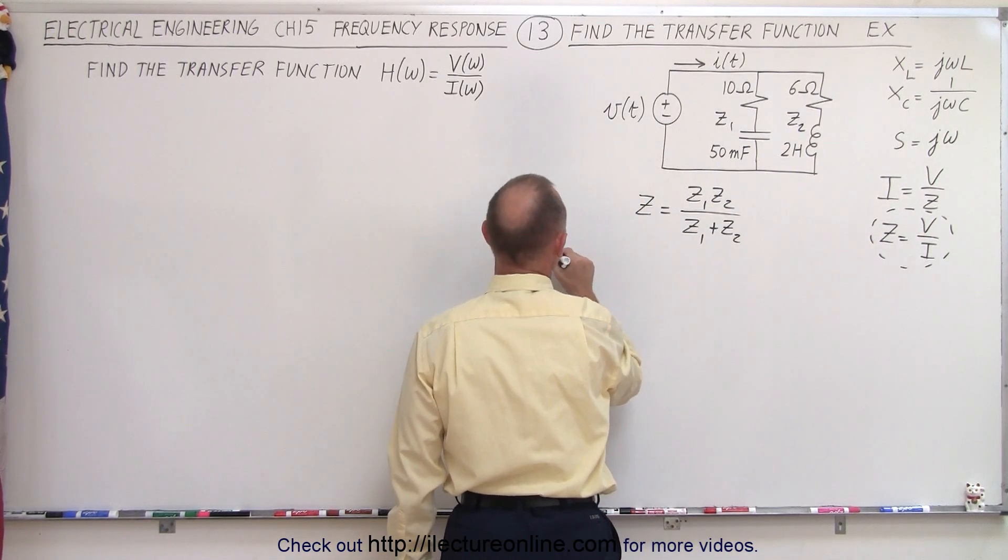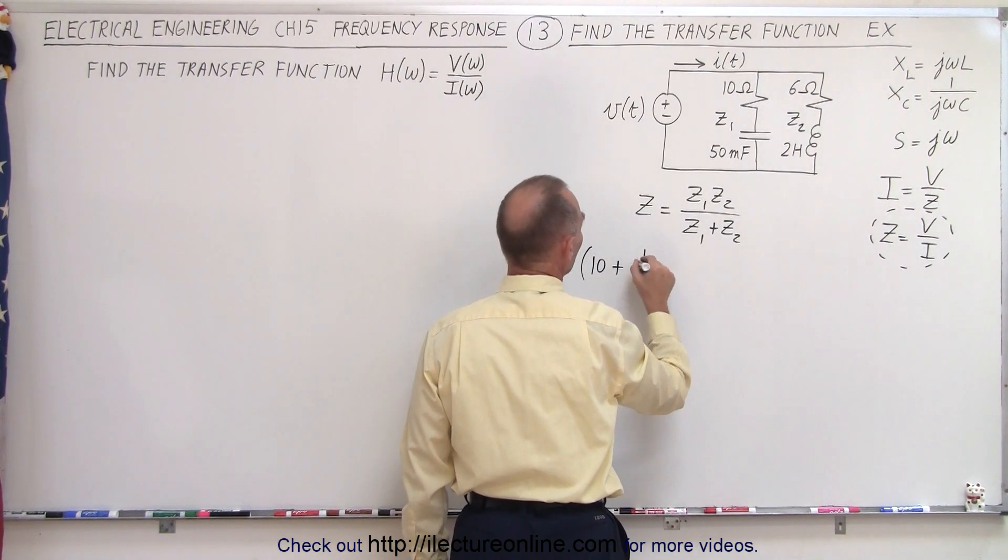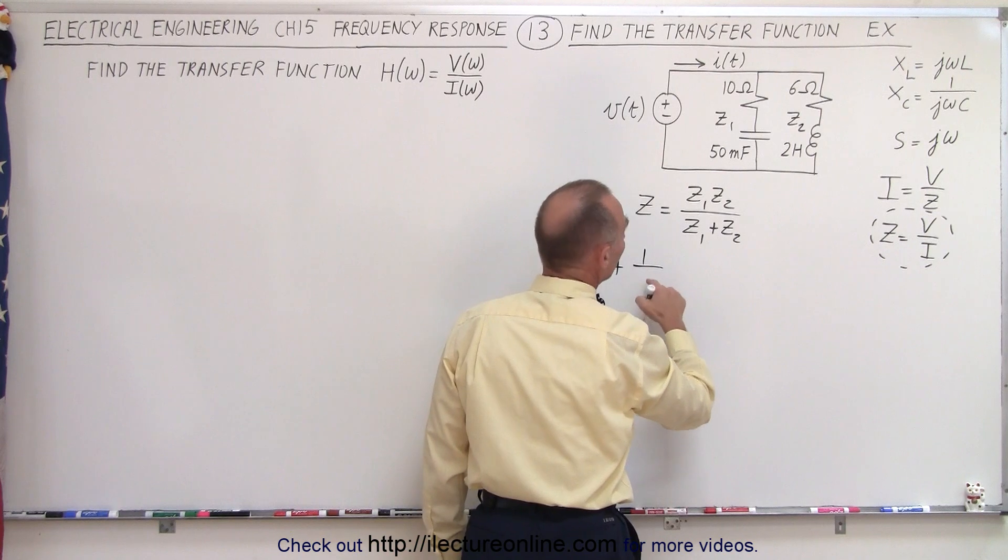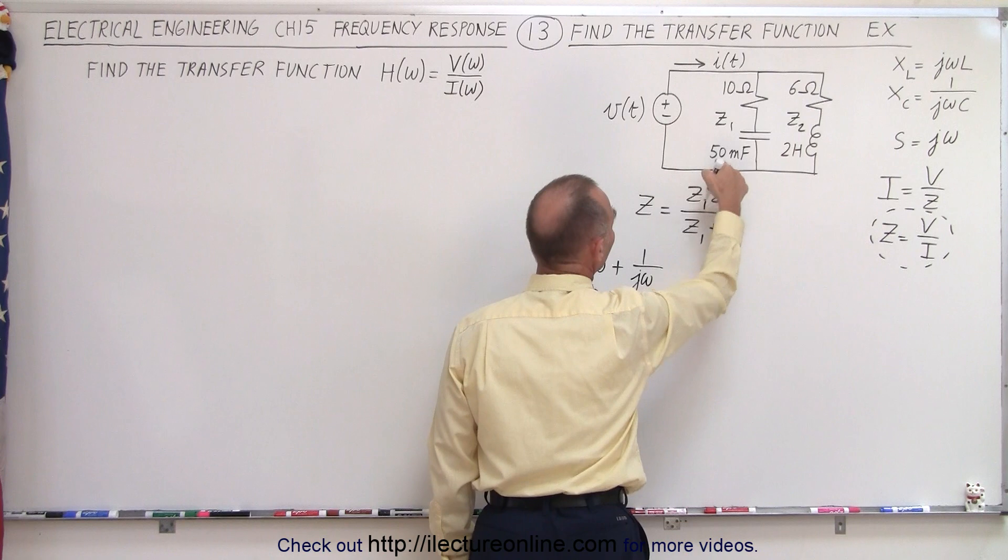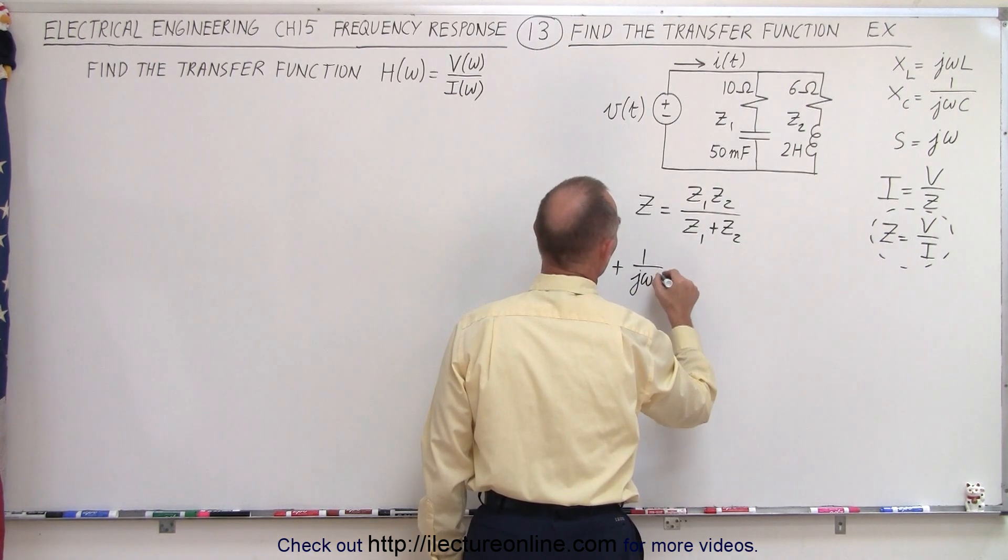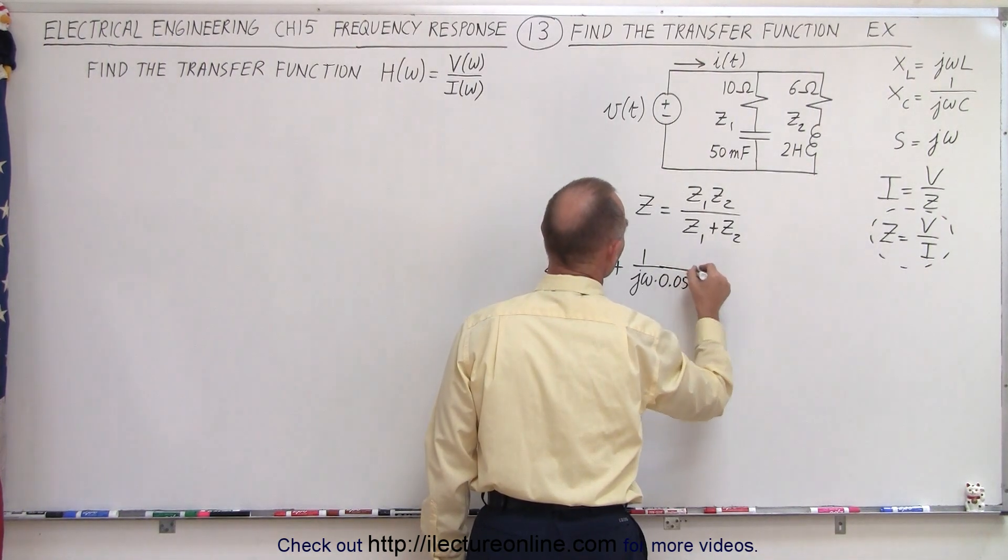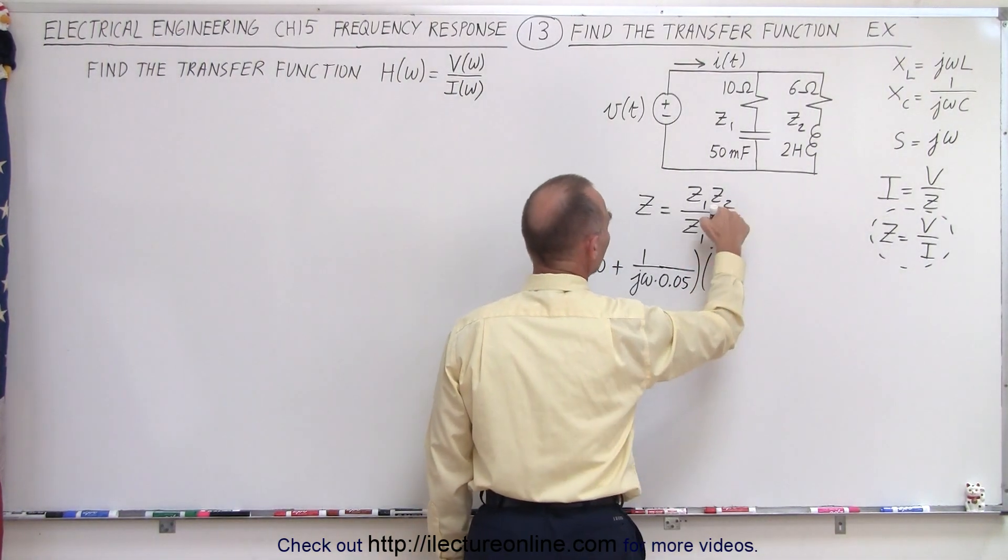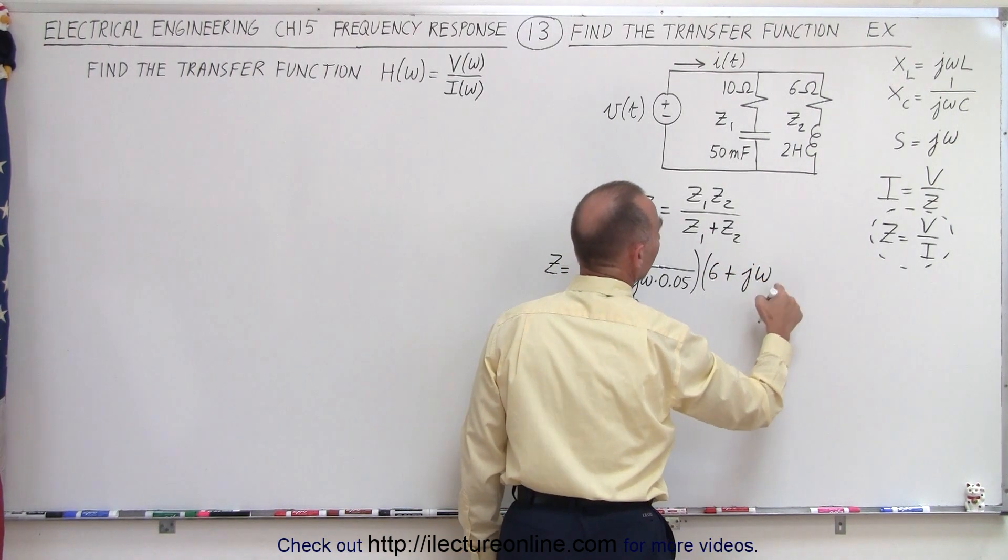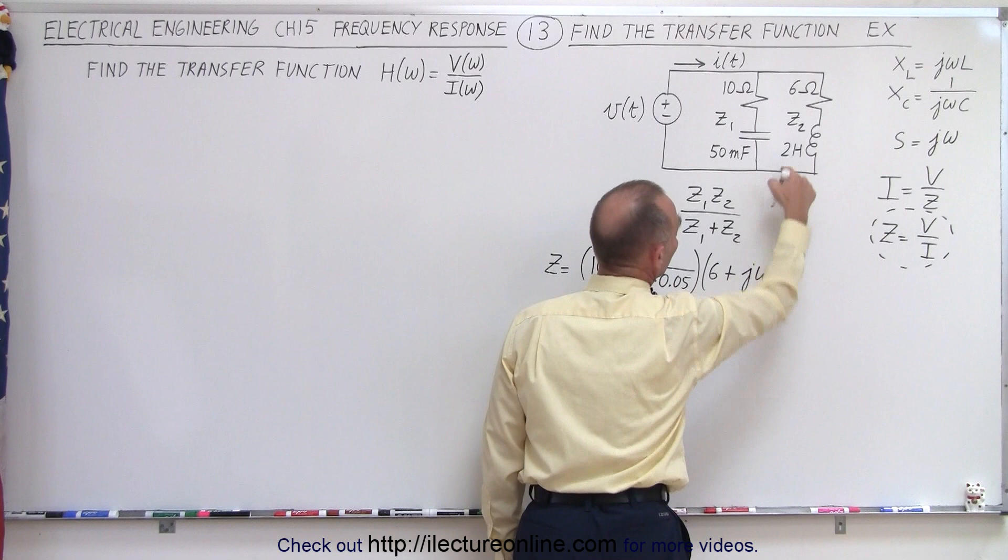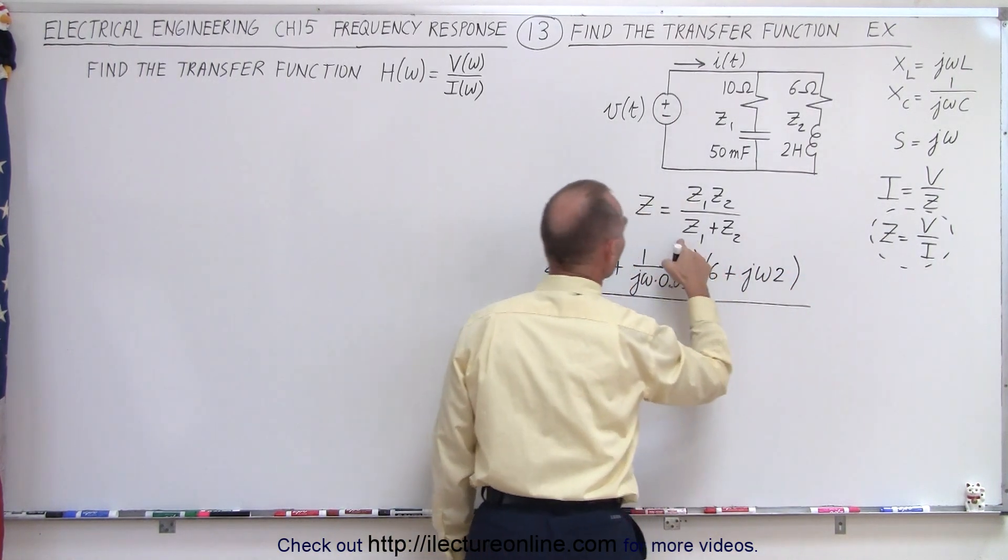So, Z is equal to 10 plus 1 over J omega C, J omega. Now, C is going to be 50 millifarads, which is 0.05. Impedance 2 is going to be 6 plus J omega L, and L is going to be, in this case, 2 Henrys.